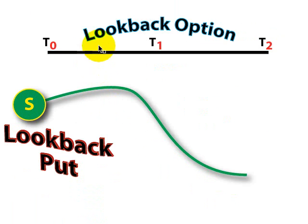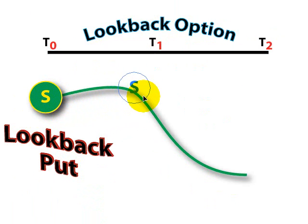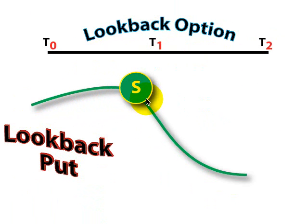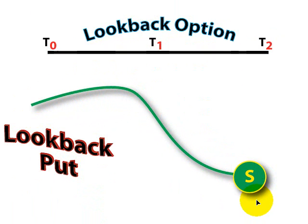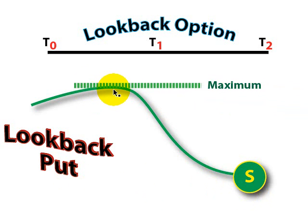Now, the other type of lookback option is the lookback put, and it operates just as you might think. Here's the stock price at time T0, and let's say it goes up to here approximately at time T1, and then down to here. At exercise, the holder of the lookback put gets to look back and locate the maximum value of the price of the stock.